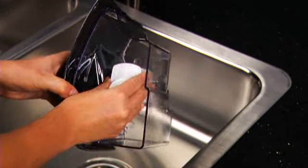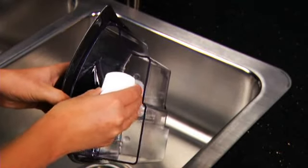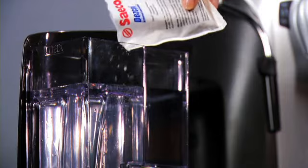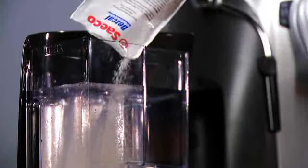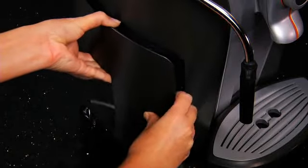To descale your machine, first make sure that the water filter, if inserted, is removed from the water tank. Dissolve one packet of Saeco Descaling Solution into one liter of water and insert water tank into machine.